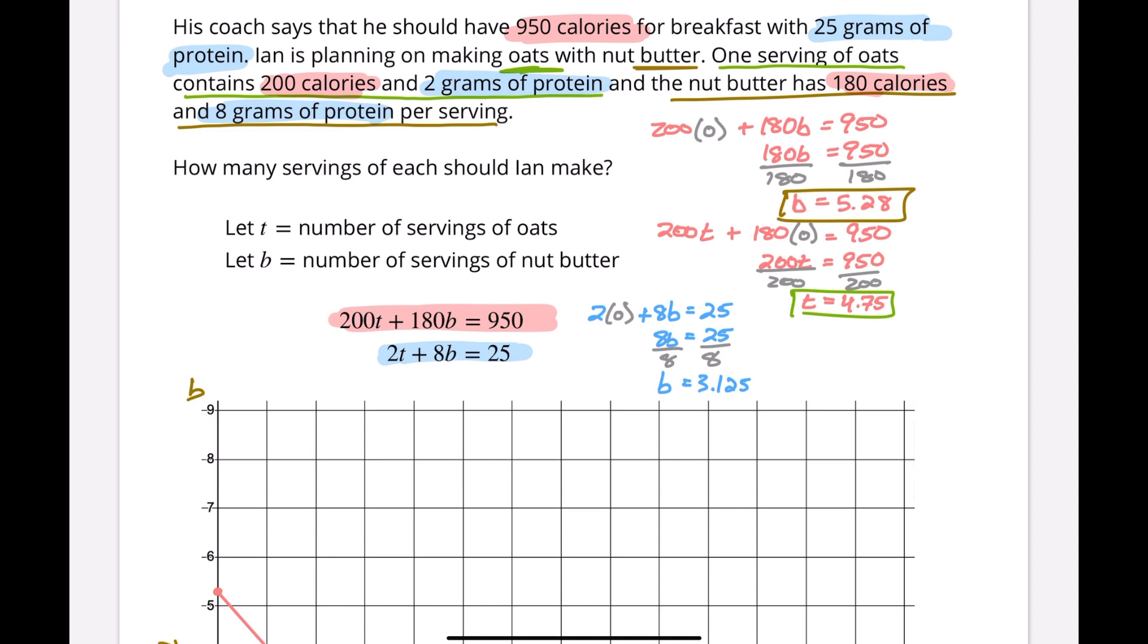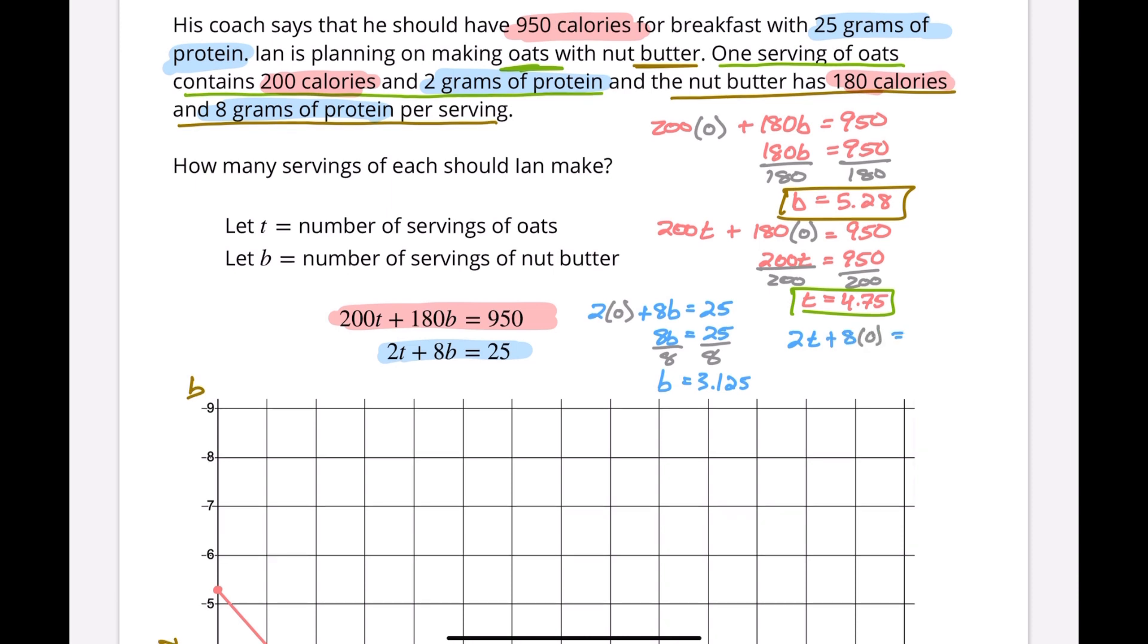And if we do the same thing again, we have 2t plus 8 times 0 equals 25. The 8 times 0 goes away, so we divide by 2, and t equals 12.5. Again, t is our oats and b is our nut butter, and those are our b and t intercepts.